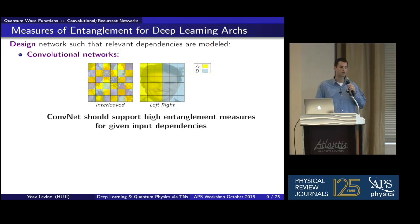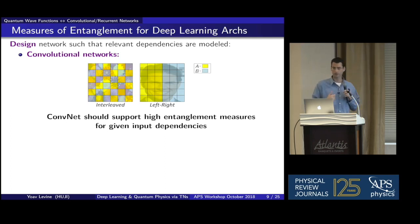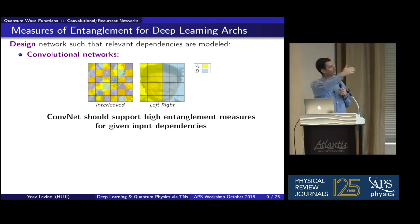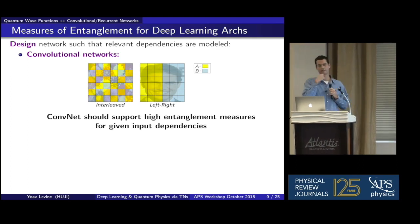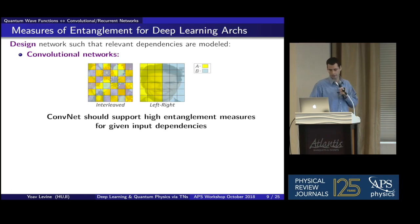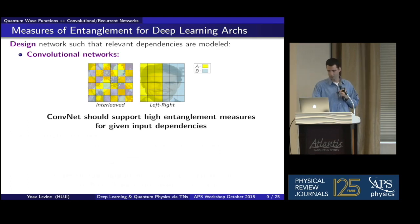Interestingly, this brings forth a design principle for deep convolutional networks. Given a data set — for example, symmetric face images — if the convolutional network has a very low rank with respect to the left-right partition, the hypothesis space is too limited. A design principle would be to have high entanglement with respect to that left-right partition, otherwise you can't model consistencies between the left and right sides of a face. For natural data, an interleaved partition tears apart correlated regions in the image, so networks had better be able to model high entanglement with respect to these partitions.